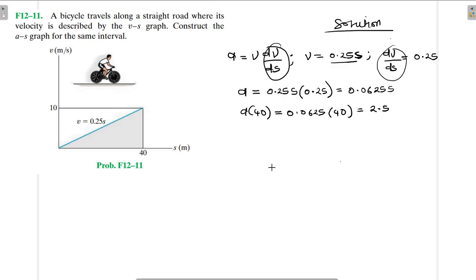We also get a linear function. Let's plot this. We have acceleration there in meters per second squared and we have displacement in meters there, and we have 40 there.